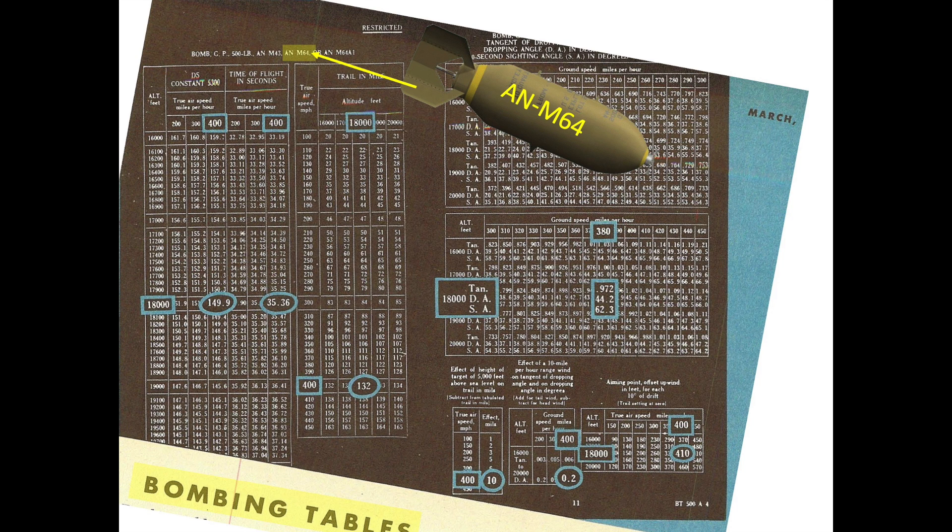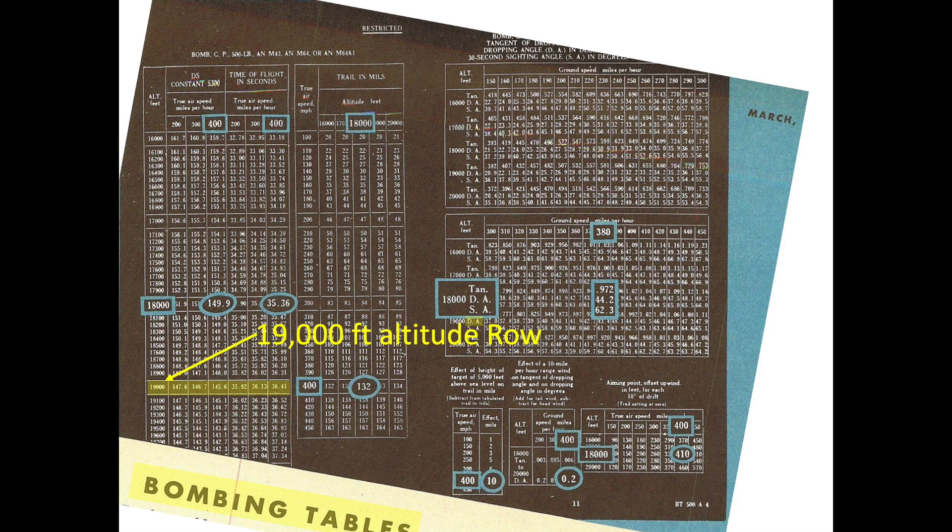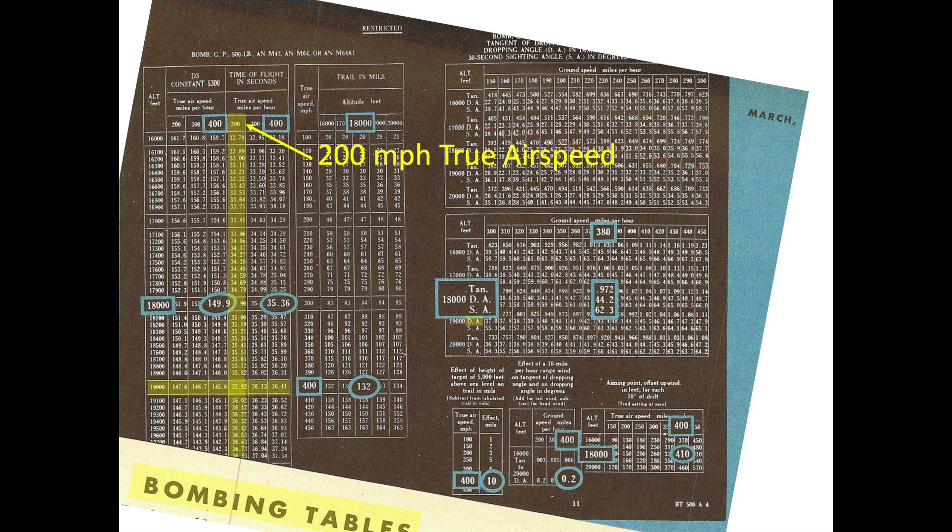To determine the bomb's time of fall in seconds, intersect the 19,000 foot altitude row with the 200 mile per hour column. A 35.92 second free fall time will be expected.